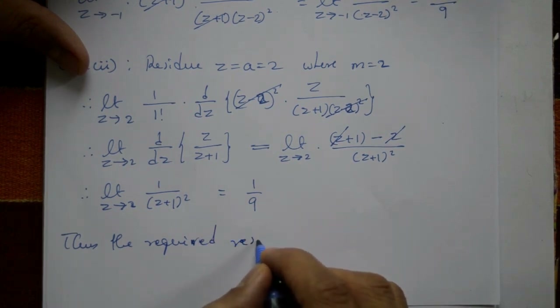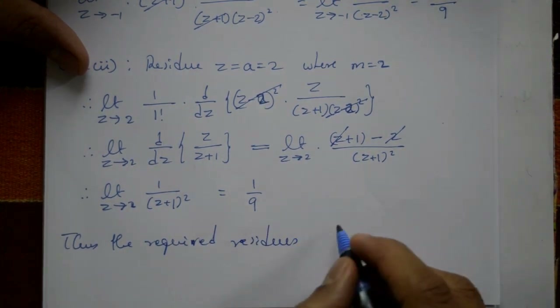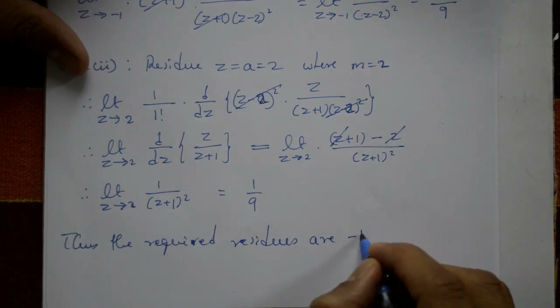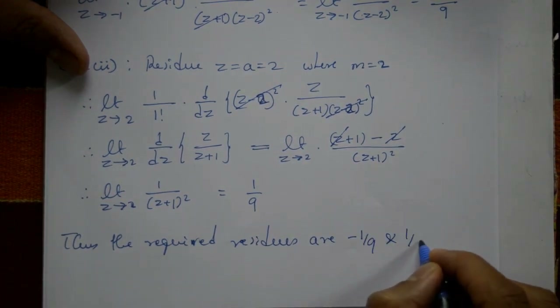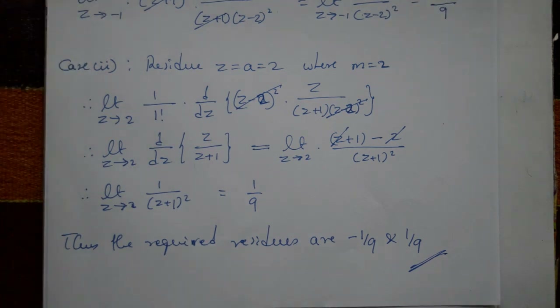Thus the required residues are: at z = -1, the residue is -1/9, and at z = 2, the residue is 1/9. This is the required solution.